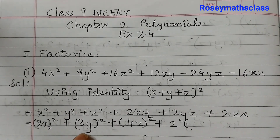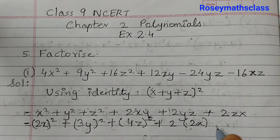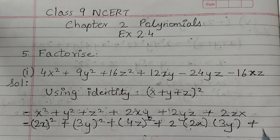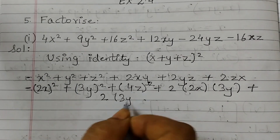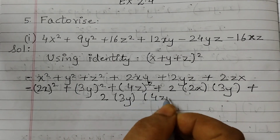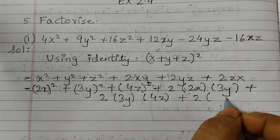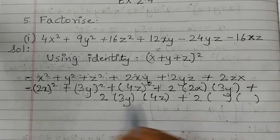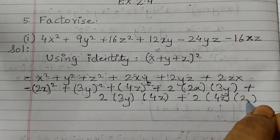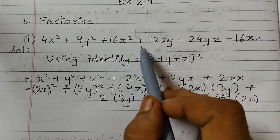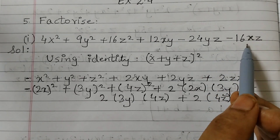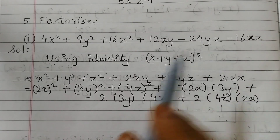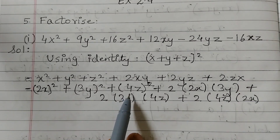Now for the cross terms: 2xy becomes 2·(2x)·(3y), 2yz becomes 2·(3y)·(4z), and 2zx becomes 2·(4z)·(2x). Now observe: there is a plus sign before the xy term, a minus sign before the yz term, and a minus sign before the xz term. We need to determine which of 2x, 3y, and 4z should be negative.